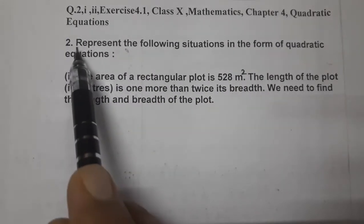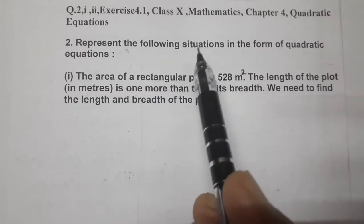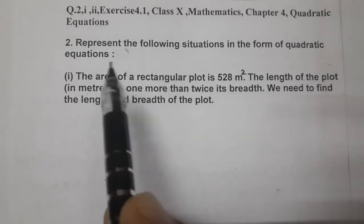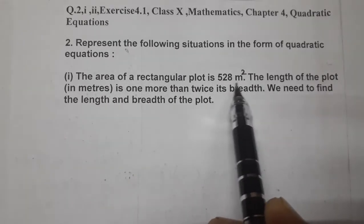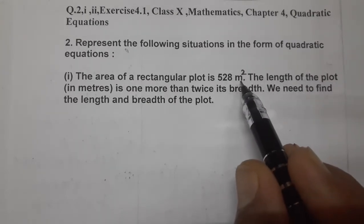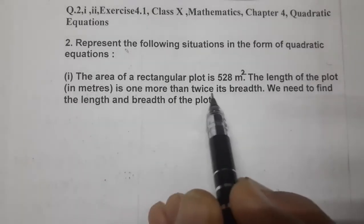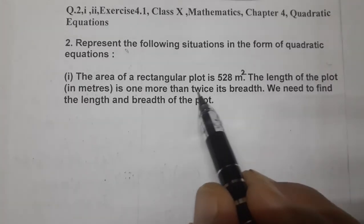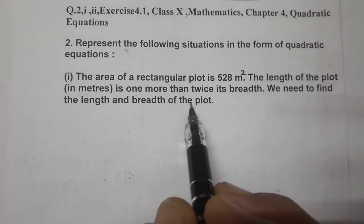So what is the question? Represent the following situations in the form of a Quadratic Equation. The first one: the area of a rectangular plot is 528 meter square. The length of the plot in meters is one more than twice the breadth. We need to find the length and breadth of the plot.